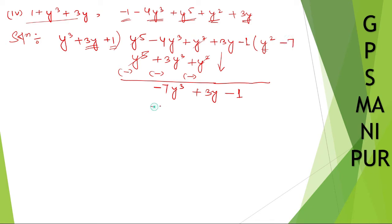Y cube into minus 7, it will be minus 7y cube. 3y into minus 7, it will be minus 21y. Plus 1 into minus 7 minus 7. Change the sign. Minus will become plus. Minus will become plus. Minus will become plus. Cancel.